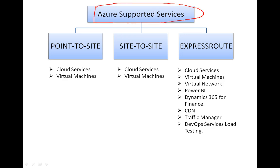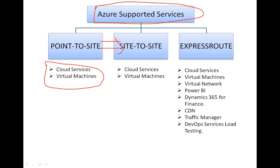What are the services supported by Point-to-Site, Site-to-Site, and ExpressRoute? There are two basic services: cloud-based services and virtual machines. Both cloud-based services and virtual machines are supported by both Point-to-Site and Site-to-Site VPN. Now if we talk about ExpressRoute, it has a few more supported services — it supports cloud services, virtual machines, virtual networks, Power BI, Dynamics 365 for Finance, CDN, Traffic Manager,